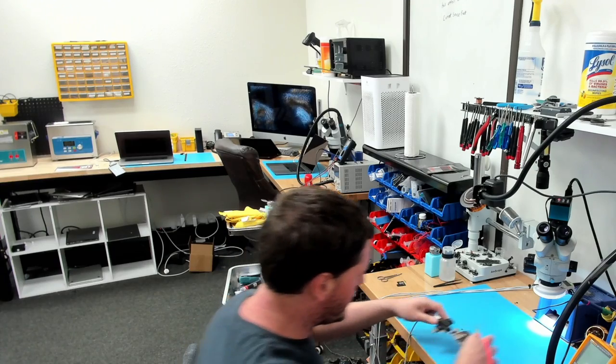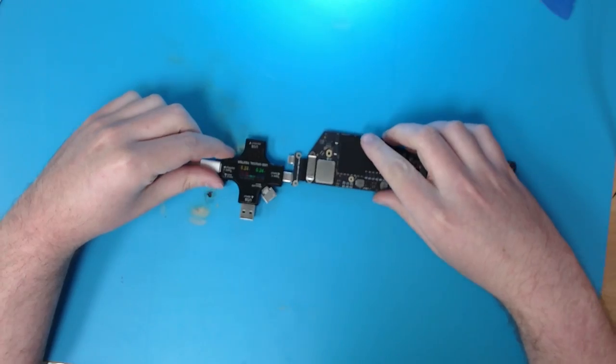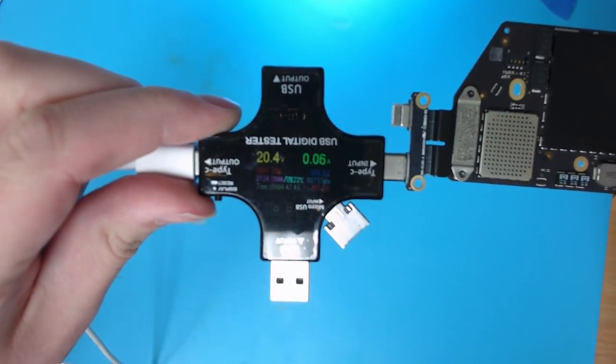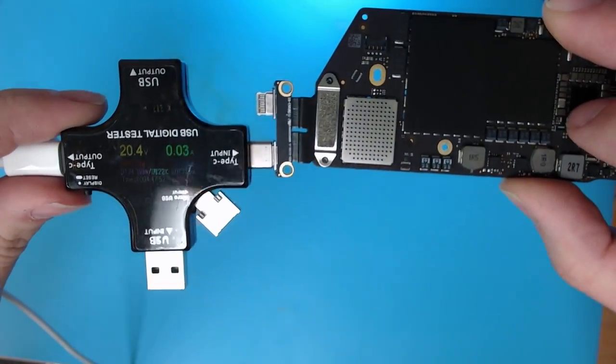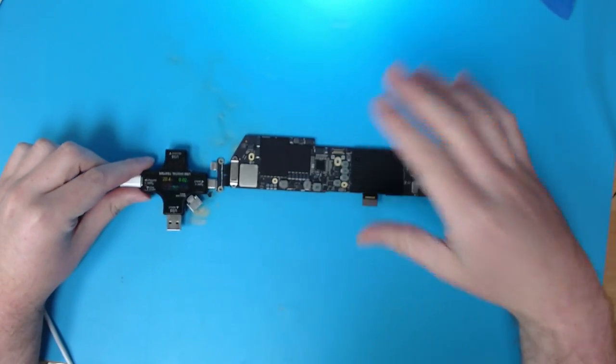So I have here, and I'm going to switch over to our desk view so you can actually see, it looks like I have here 20 volts and 0.05, and it just stays there. So typically when we see an issue like this on this board, it means one of two things, or one of three things.